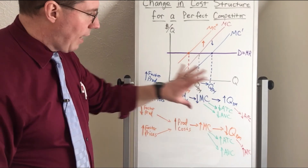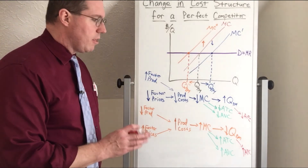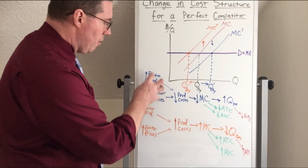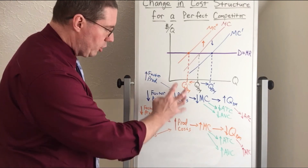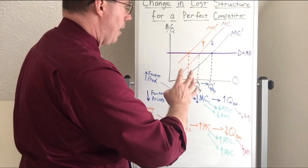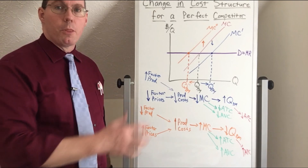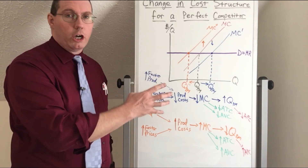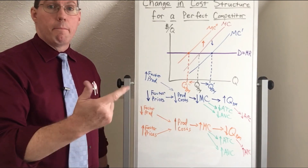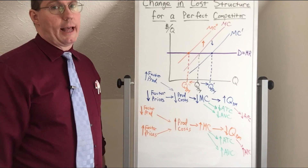These are all the dynamic changes that can happen for a perfect competitor, and the same things will happen for monopolies, which we'll review next. In the very next segment, we're going to see what happens to the perfect competitor when the price changes or when the cost structure changes — putting the perfect competitor in a place where they'll either profit, break even, operate at a loss, or have to temporarily shut down operations.